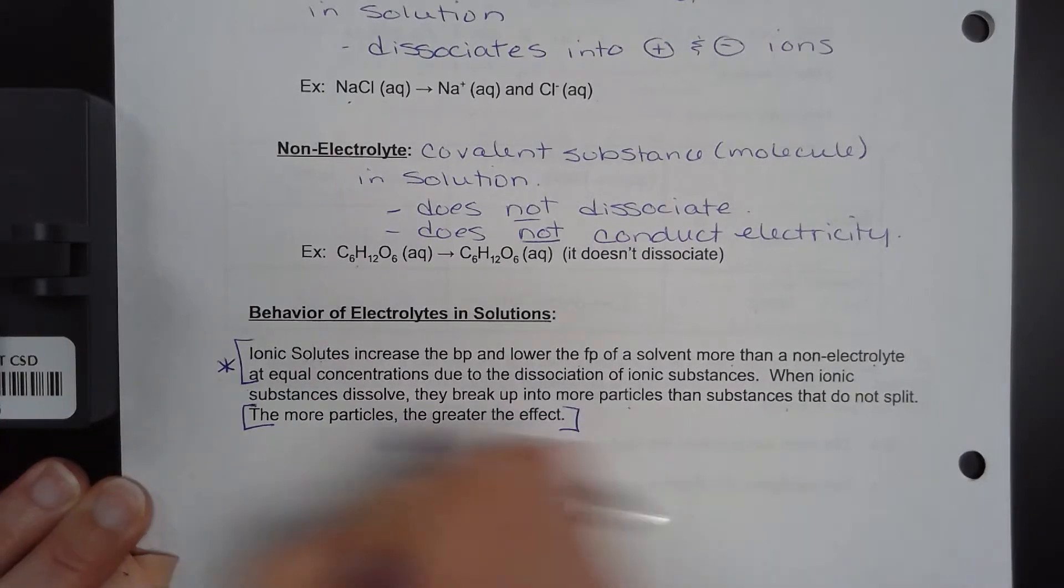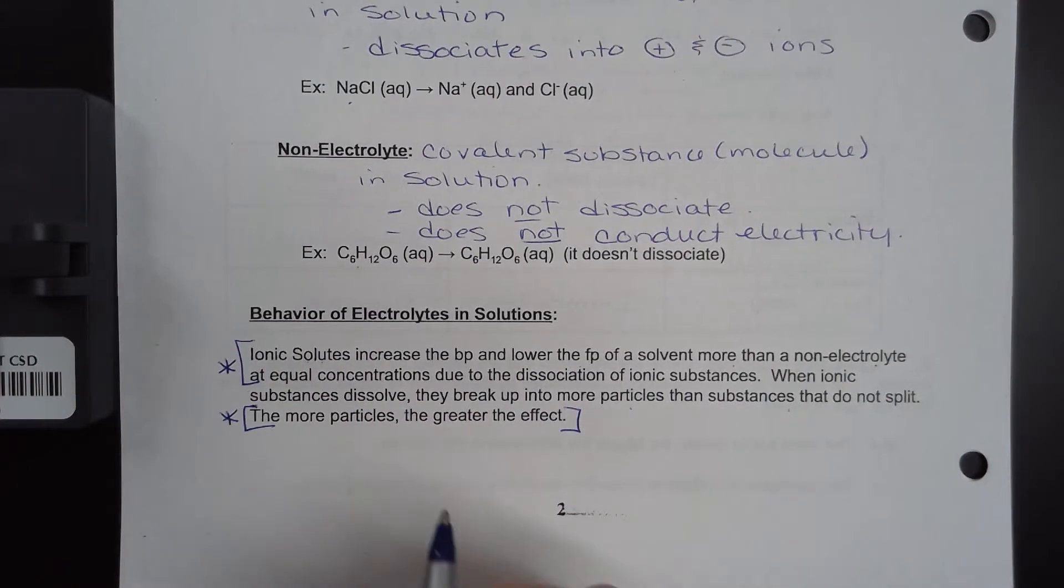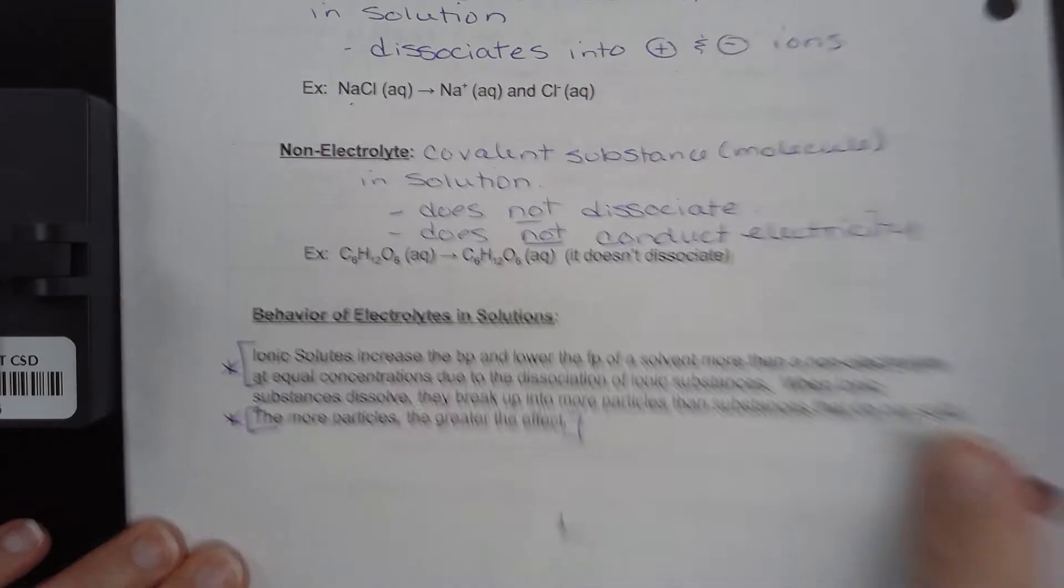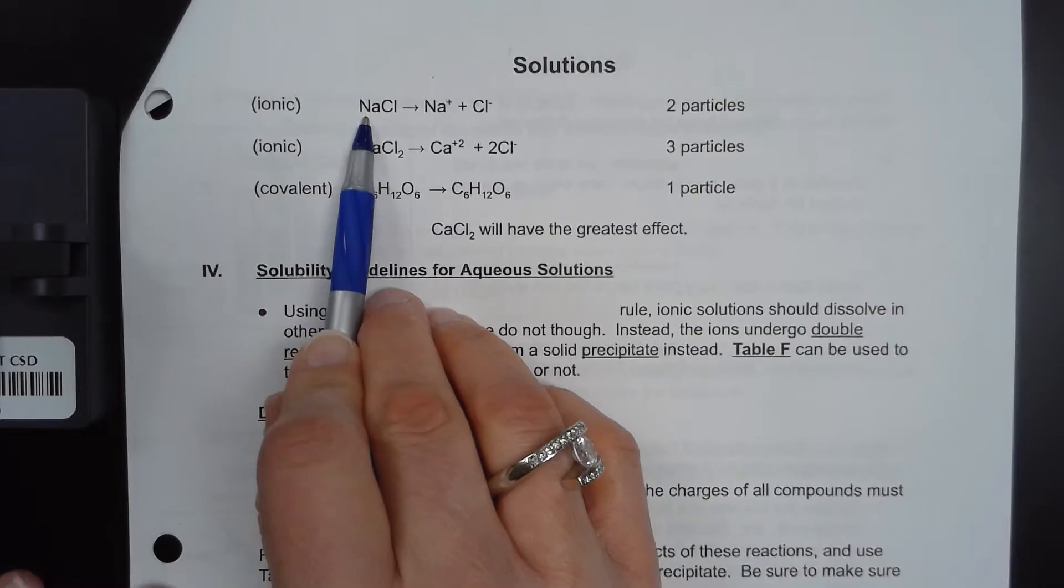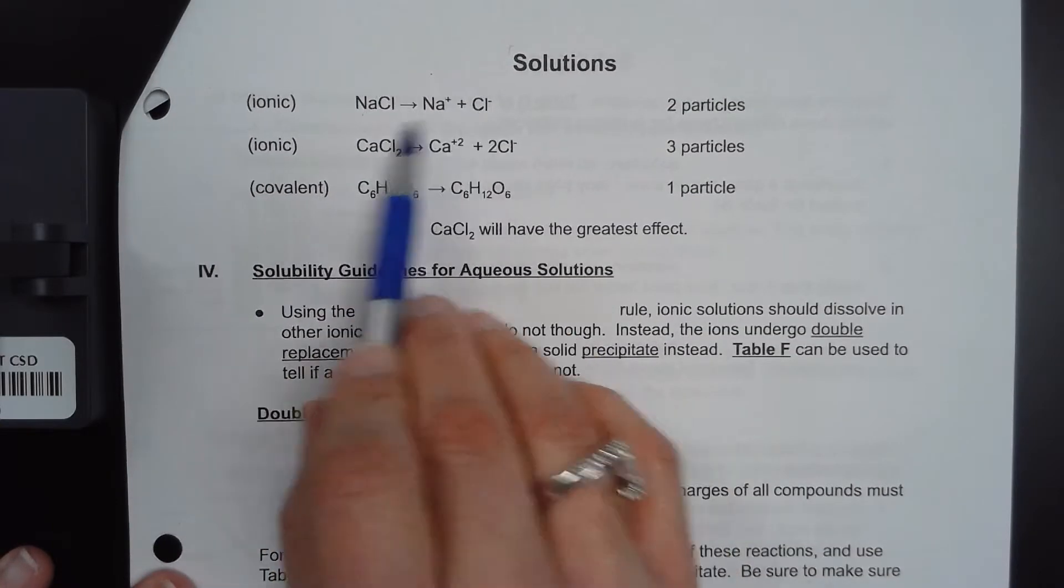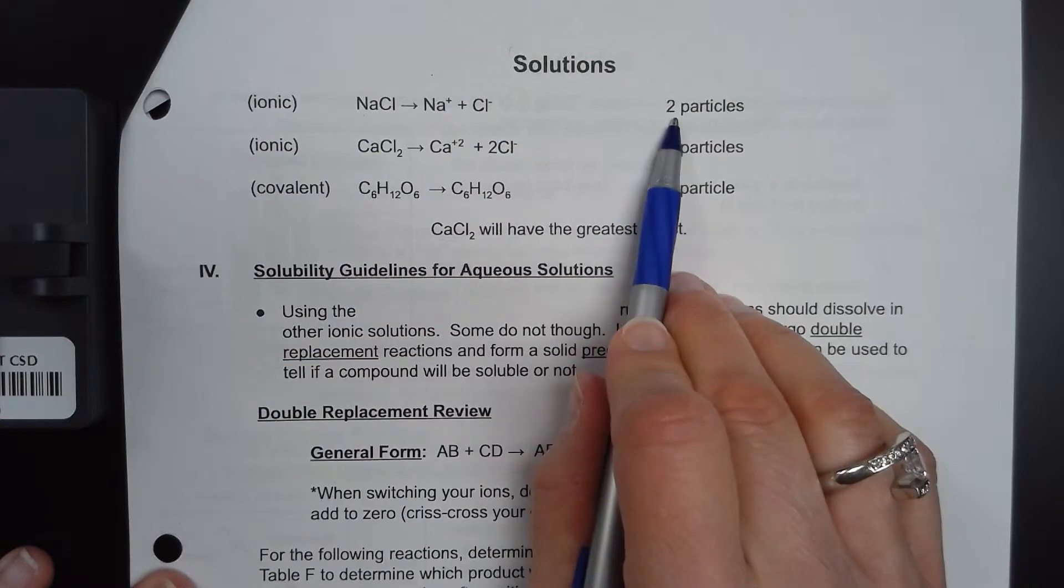Very important. An example of that is on the next page. An ionic substance. When we start with NaCl it breaks up into Na and Cl. This is all balanced. We end up with two particles. Those two particles are right here.